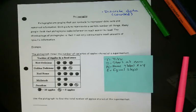So pictographs are graphs that use symbols to represent data sets and numerical information. Each picture represents a certain number of things. Many people think that pictographs make information much easier to read. The disadvantage of pictographs is that it can only communicate small amounts of very specific information.